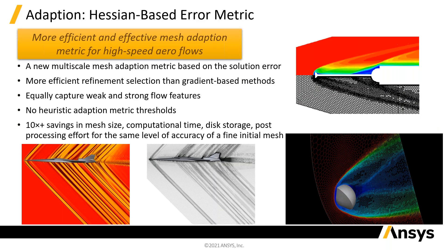At the moment this is really designed for high-speed aero, but it will come more generally into the code. There's been a focus over the last few releases on improving the way adaption is done and building in automatic tools — for example, knowing whether to adapt on a variable's gradient, scaled or unscaled. There are now best practices set up for combustion, DPM, and shock capturing with a shock indicator.